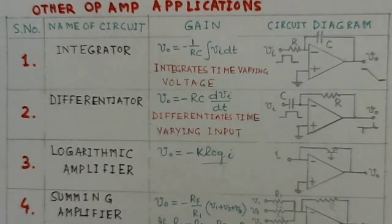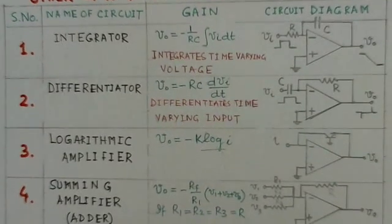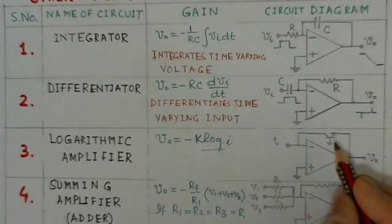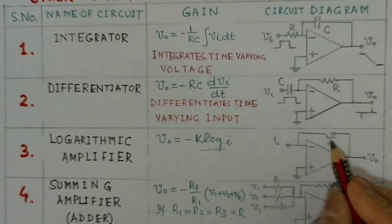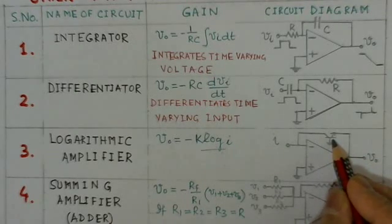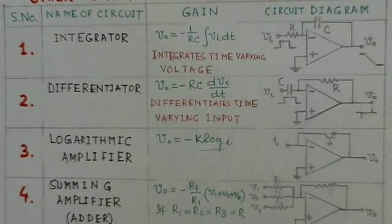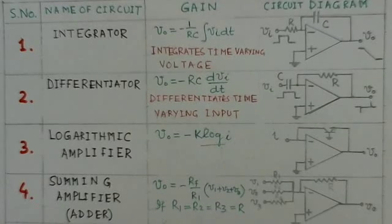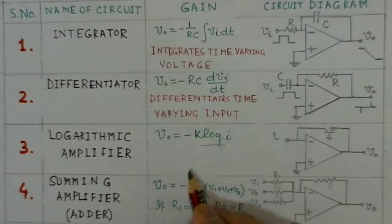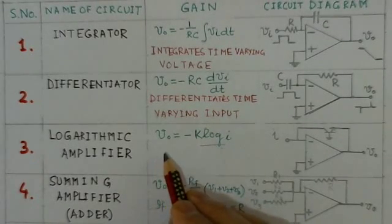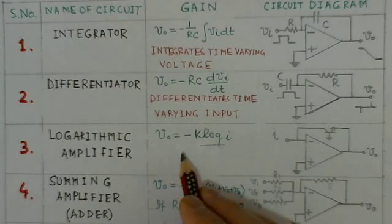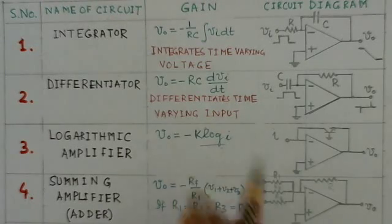A variation of the logarithmic amplifier uses a transistor instead of a diode in the feedback path. The advantage of this transistor-based log amplifier is that the dynamic range of the input can be about 9 to 10 decades.